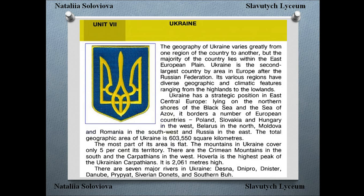The geography of Ukraine varies greatly from one region to another, but the majority of the country lies within the East European Plain. Ukraine is the second-largest country by area in Europe after the Russian Federation. Its various regions have diverse geographic and climatic features, ranging from the highlands to the lowlands. Ukraine has a strategic position in East-Central Europe, laying on the northern shores of the Black Sea and the Sea of Azov. It borders Poland, Slovakia, and Hungary in the West, Belarus in the North, Moldova and Romania in the South-West, and Russia in the East.